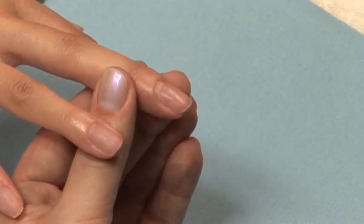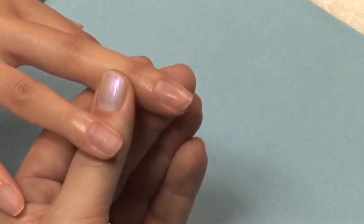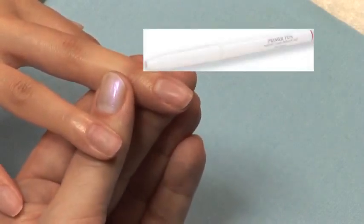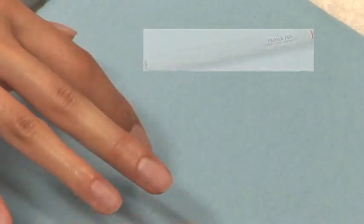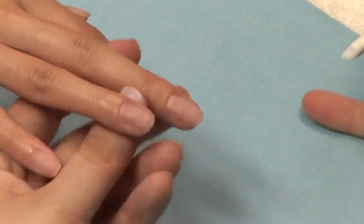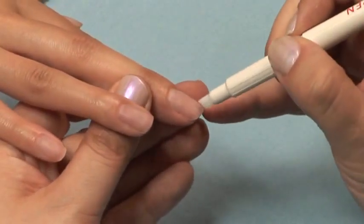If you are applying acrylic or gel nails, you'll need to apply a single coat of primer. The Star Nail Primer Pen ensures that each nail gets the perfect amount of primer and protects your client from overexposure.